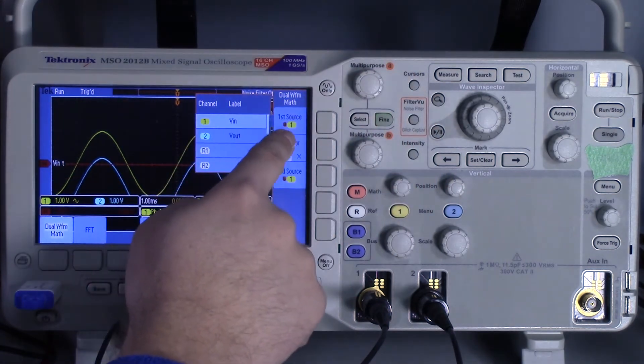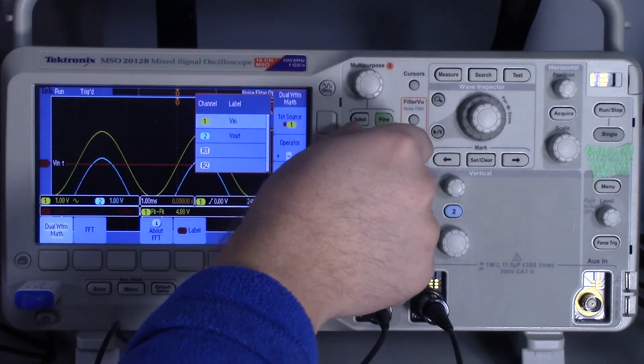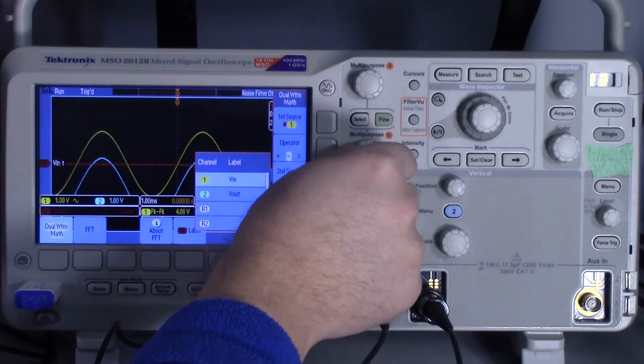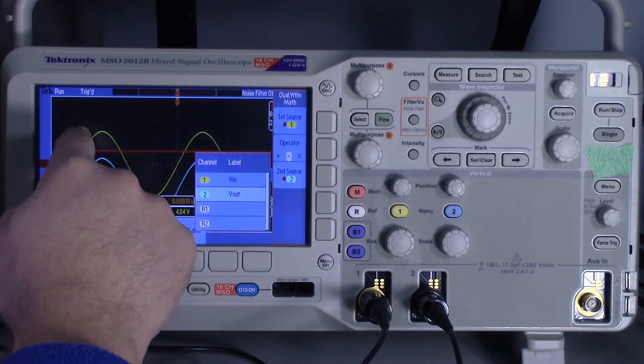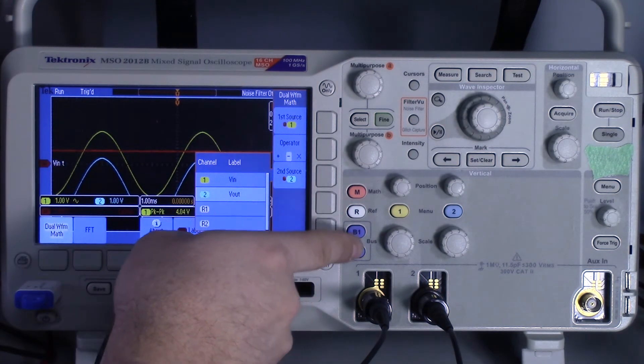And then channel 2, I want that to be the output, and I want minus - I want the difference between these, so I want to know if this is a constant 1.6 volts.